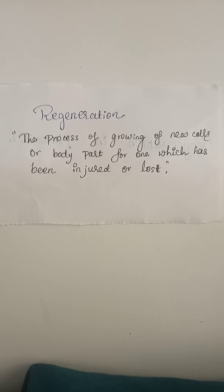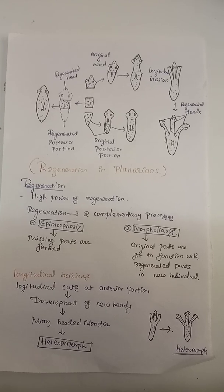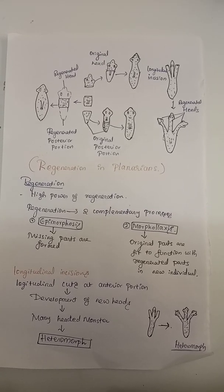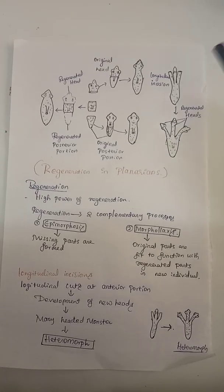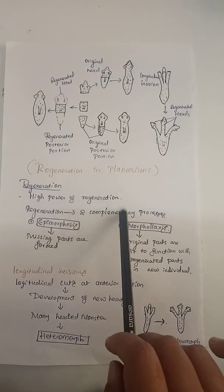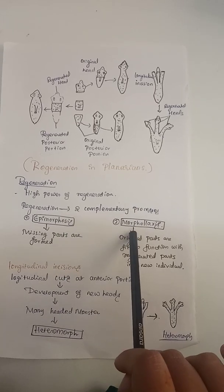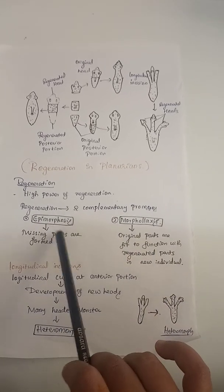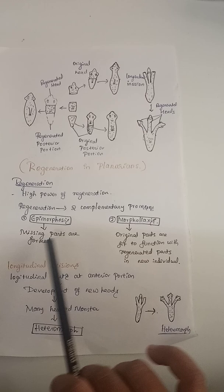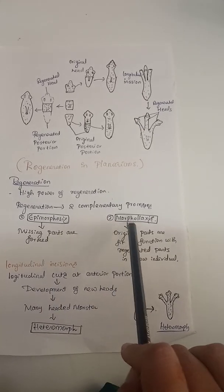This is the overview of regeneration in planarians. Planarians have high power of regeneration. It has two complementary processes: one is epimorphosis, another is morpholexis. Epimorphosis means missing parts are formed; morpholexis means original parts fit to function with regenerated parts in new individuals.